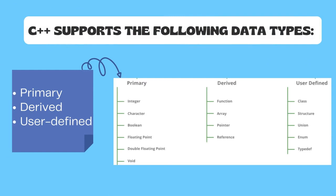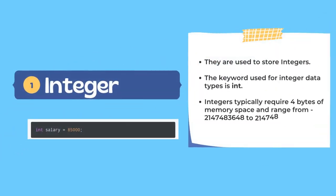Coming to the categories of data types in C++, there are three types: first is primary data types, second is derived data types, and third is user-defined data types. Primary data types are the built-in data types already present in a programming language. Derived data types are derived from other data types. User-defined data types are created by the user as per their needs.